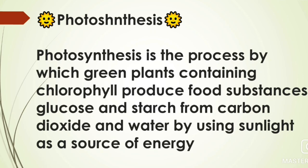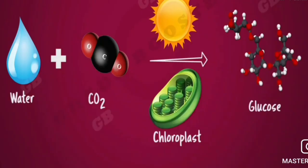Let us go into detail about photosynthesis with a chemical equation. The plant absorbs water through its roots. Through stomata in the leaves, it absorbs CO2 from the surroundings — the pores of the stomata open and carbon dioxide enters. In the presence of sunlight and chloroplast, where the chlorophyll green pigment is present, the process takes place.